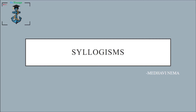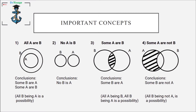Without wasting any time, let's get started. We will be using Venn diagrams to solve the questions. We will be given a few statements and then a few conclusions. We have to look at the statements carefully, draw the Venn diagram, and arrive at conclusions. The options will be like only conclusion one is true, only conclusion two is true, both are false, both are true, and so on.